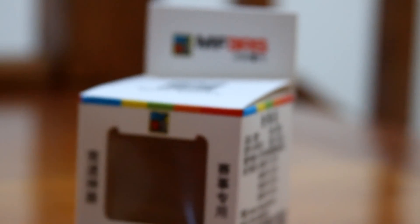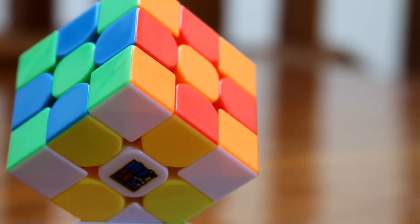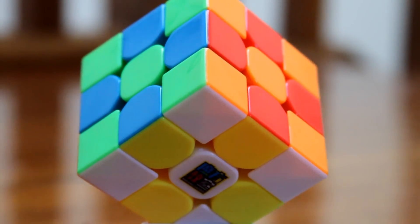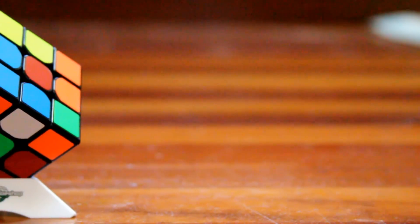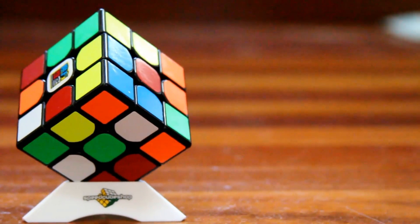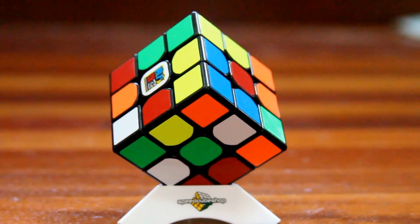Now, there are a ton of options for good budget 3x3s, but there's really just one that stands out the most, and that is the Cubing Classroom MF3 RS. This is the first budget 3x3 I've seen that's come with a mechanism even remotely similar to a more professional end-speedcube, and it definitely shows through in the performance.